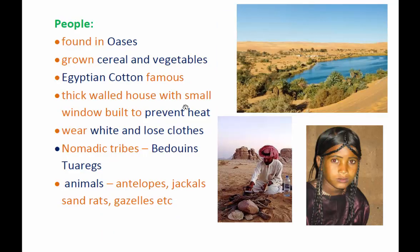The people are usually found near the oasis or in the oasis. Oasis, as we have already learned, is a spot in the desert where there are ponds and a few plants and animals. People in the Sahara Desert grow cereals and vegetables in small amounts. The Egyptian cotton, which you might have heard of, is very famous in the world. As far as the houses of the people are concerned, most people are nomadic, but those who settle permanently build walls that are very thick with very small windows.